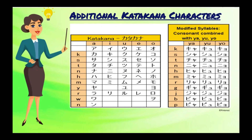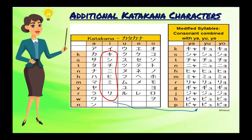We also have additional katakana characters by simply adding a small ya, yu, or yo at the ending of i-row characters such as ki, shi, chi, ni, hi, mi, ri, gi, ji, bi, and pi. For example, katakana Ki plus small Ya equals Kya. Make sure to emphasize the size of small ya, yu, and yo when writing.